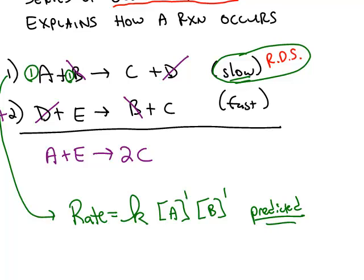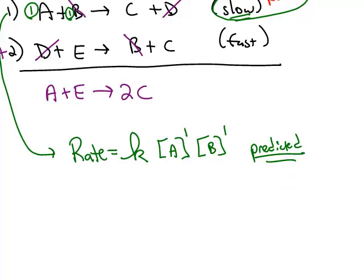That means we could go in the lab and we could test that mechanism to see if the rate law really is A to the first power times B to the first power.